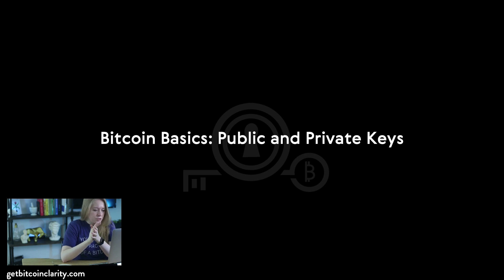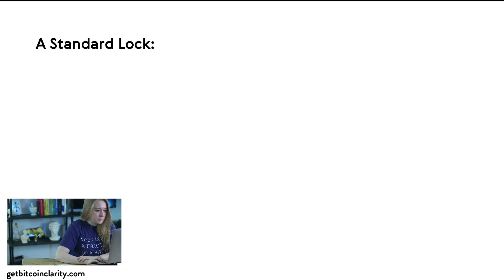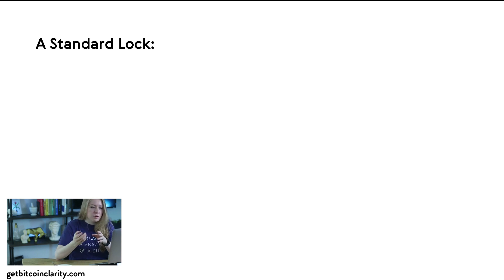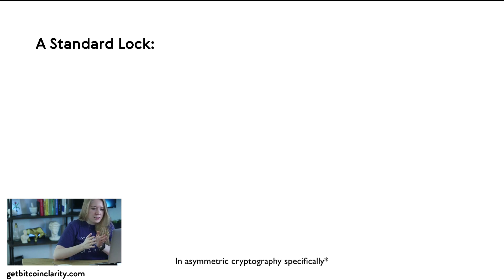All this information is also in the book 'Bitcoin Clarity' and in a course I've made — links for both of those you can find below. The difference between keys in the physical world and keys in the Bitcoin cryptographic world is that there are two types of keys in cryptography.